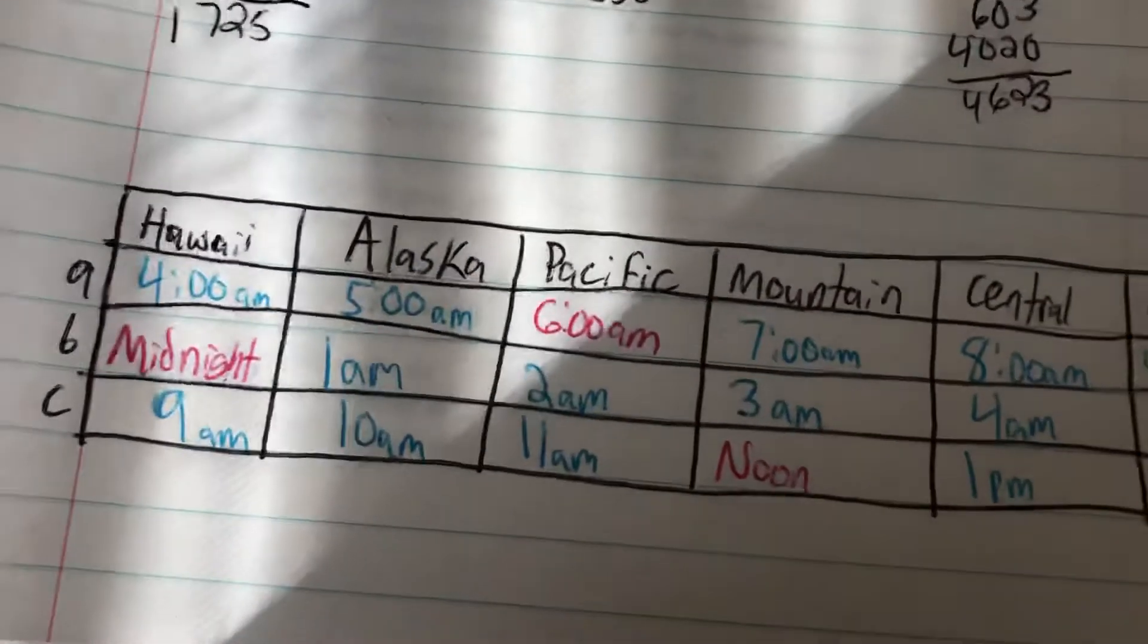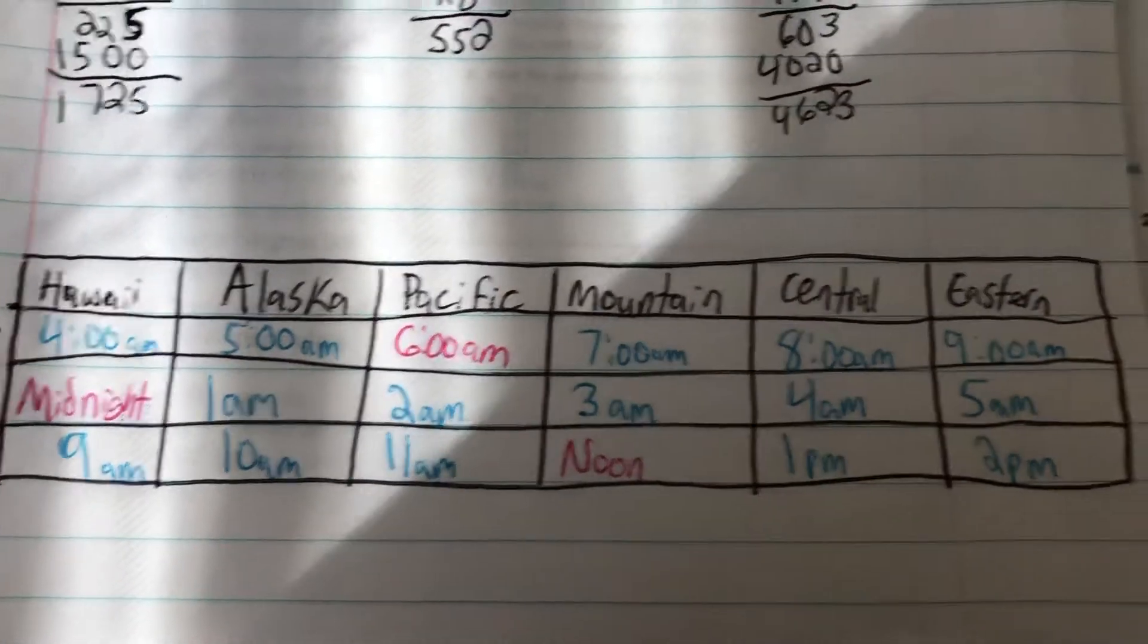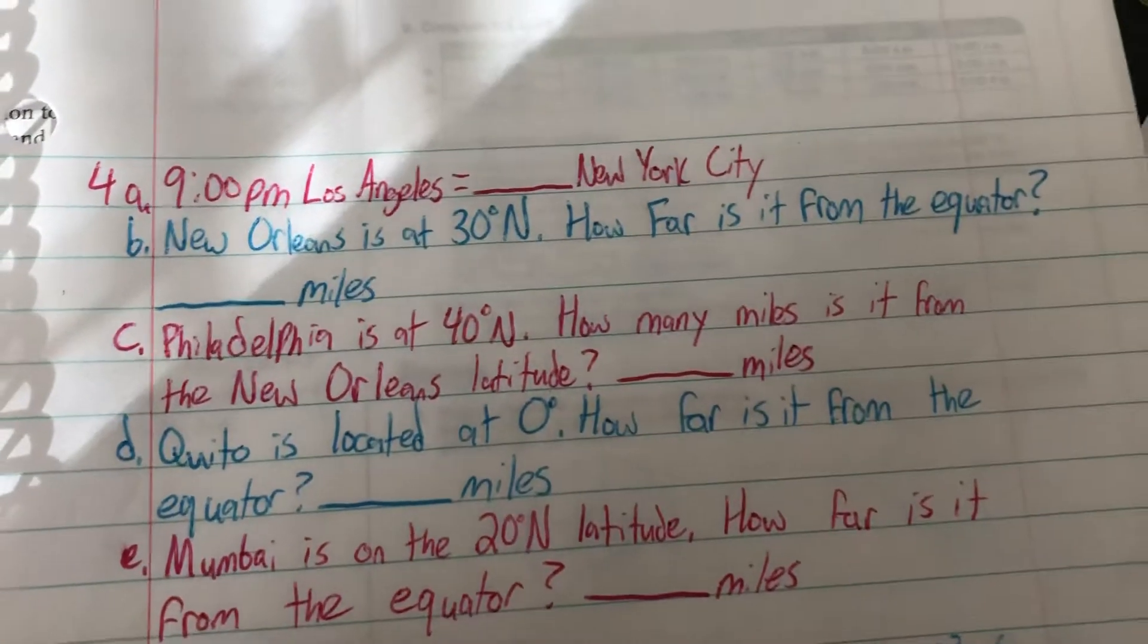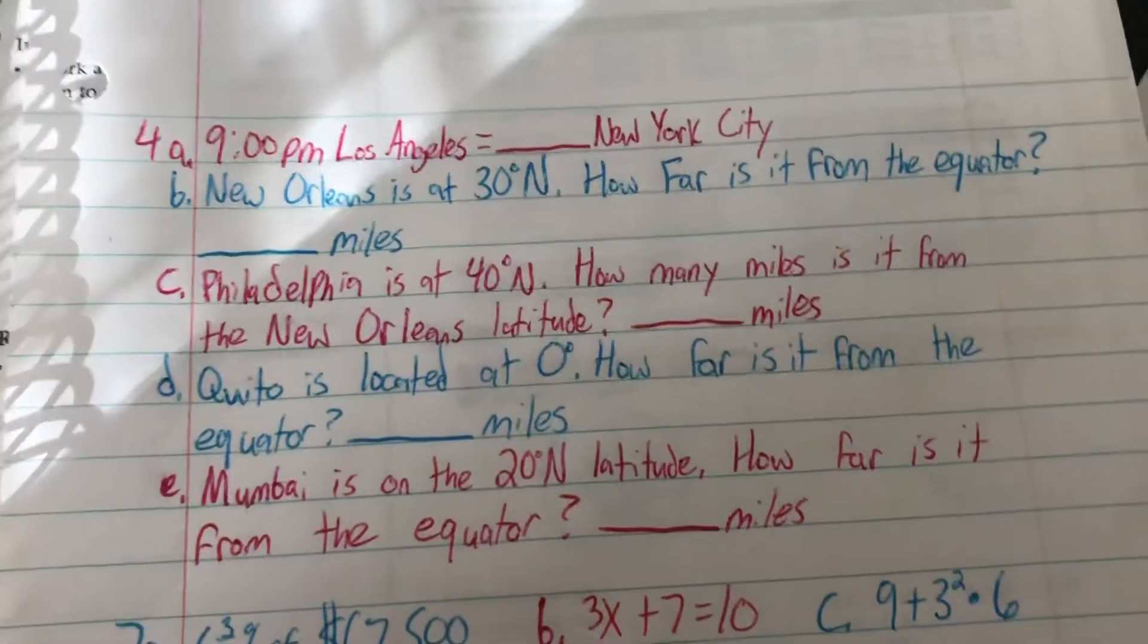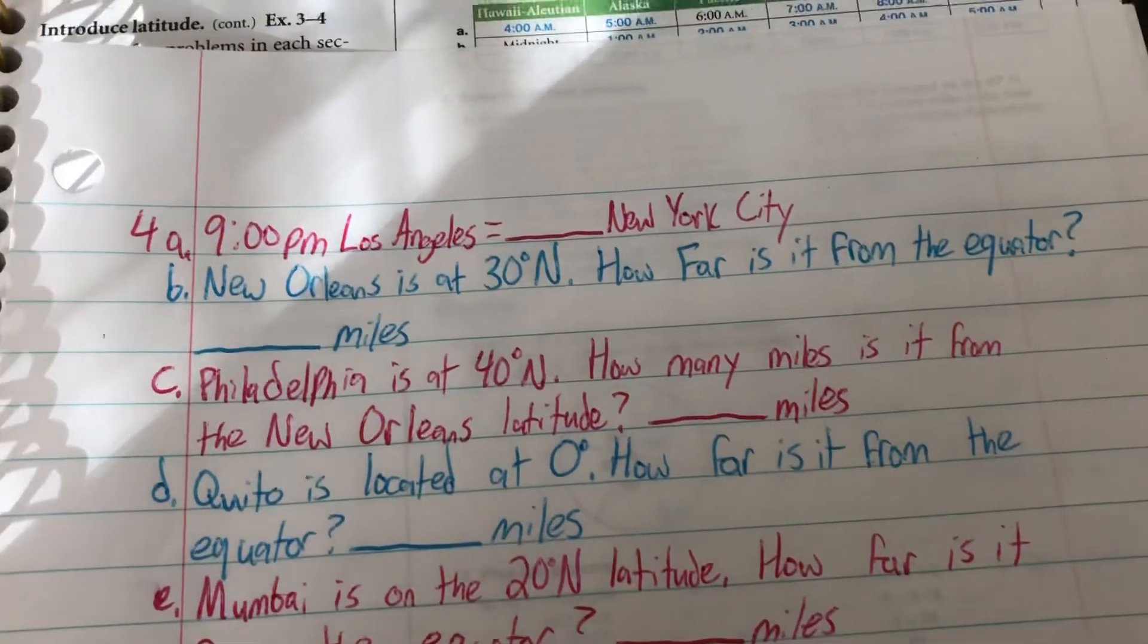I hope these time zones are making sense. It's pretty straightforward. You just have to know whether it is east or west of the one you're currently in. On problem 4 it gives us some word problems.